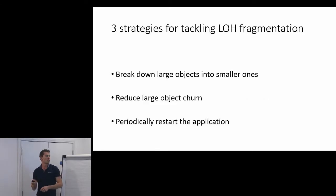So your strategies up till now for dealing with this, in rough order of goodness, are break down large objects into smaller ones and write some kind of functionally equivalent wrapper class, or you can reduce large object churn, or ideally eliminate it completely, or the least elegant solution is you can periodically restart your application, which is what IIS does when you recycle app pools, essentially.